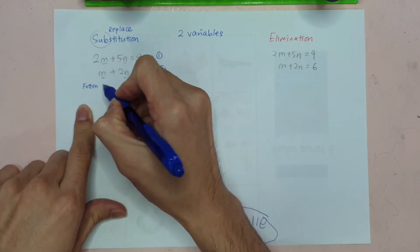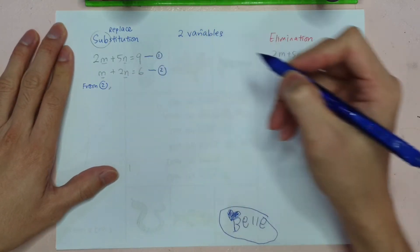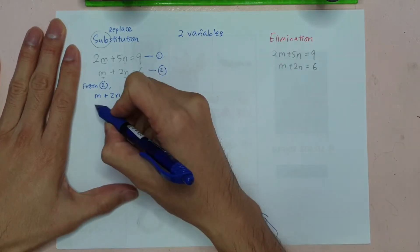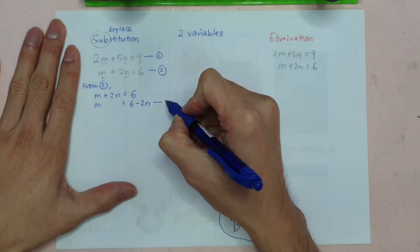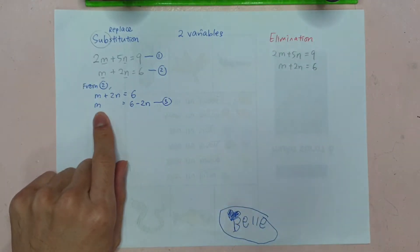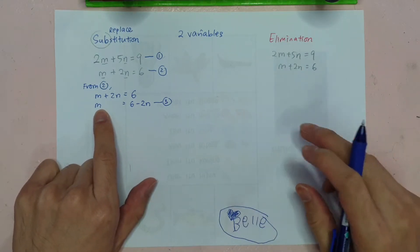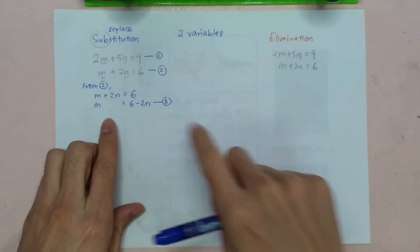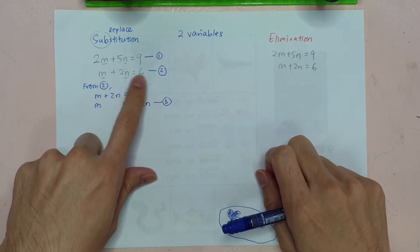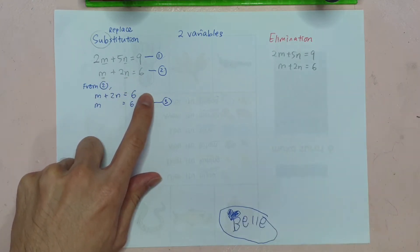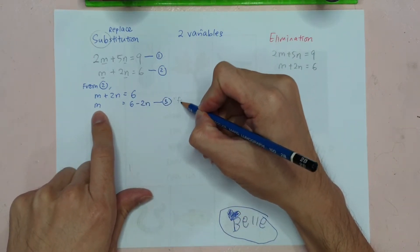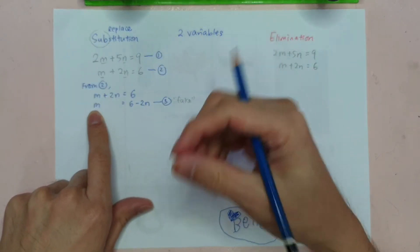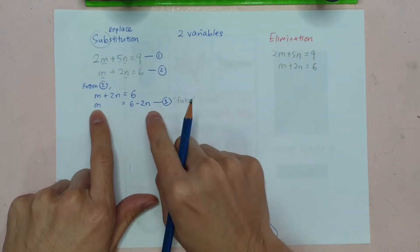From equation number 2: M plus 2N equals to 6, so M equals to 6 minus 2N. Why do we rearrange it? Because 'replace' means you have to ganti. It's sort of re-converted into a so-called fake M answer — because M is supposed to be an actual number, but here it still has N inside.